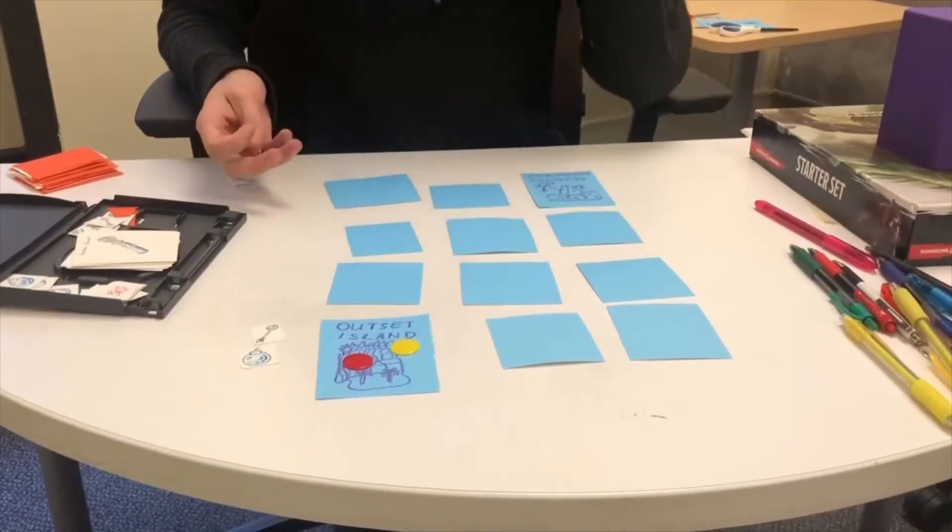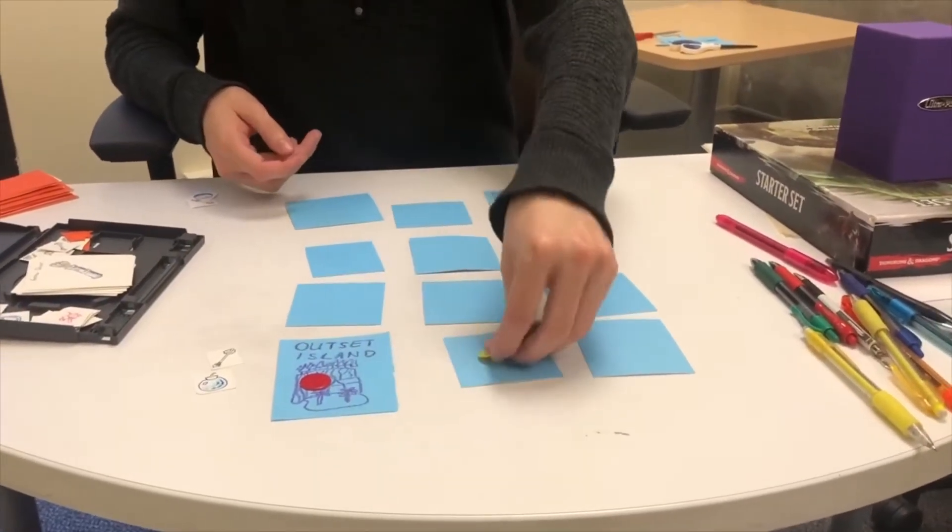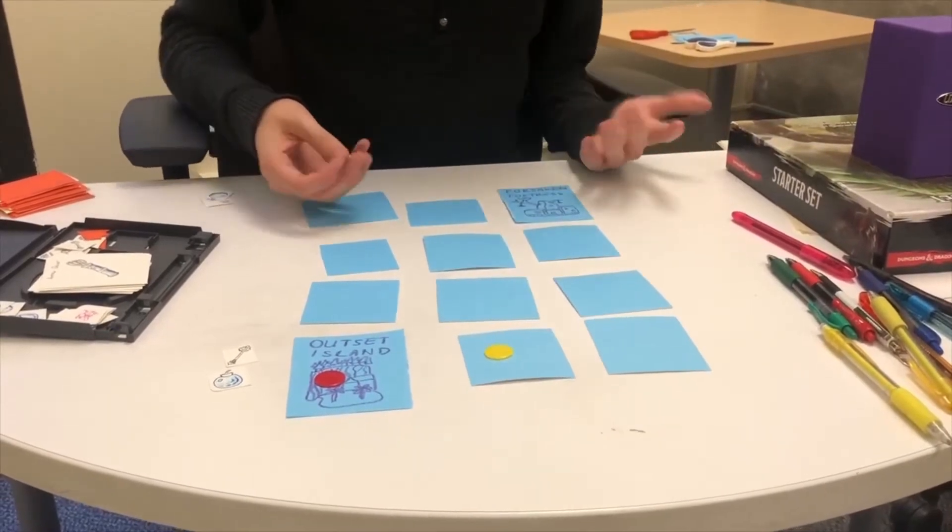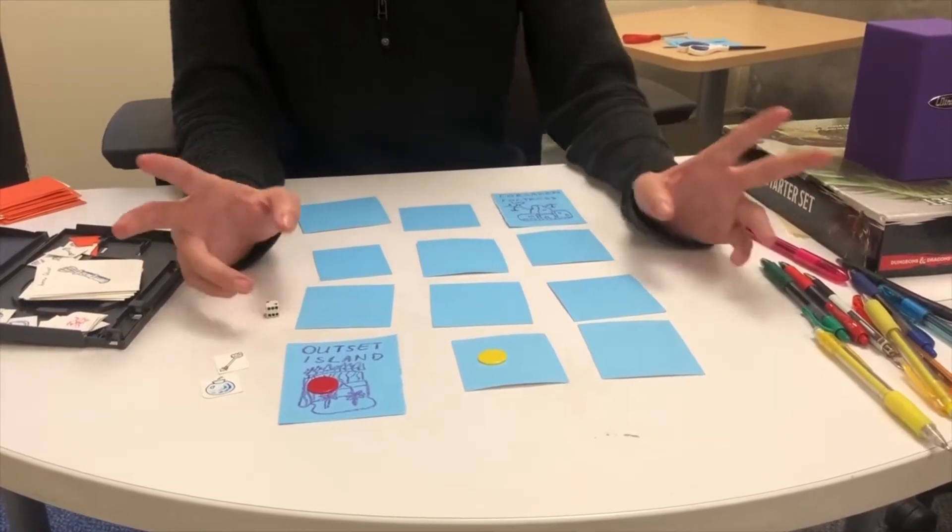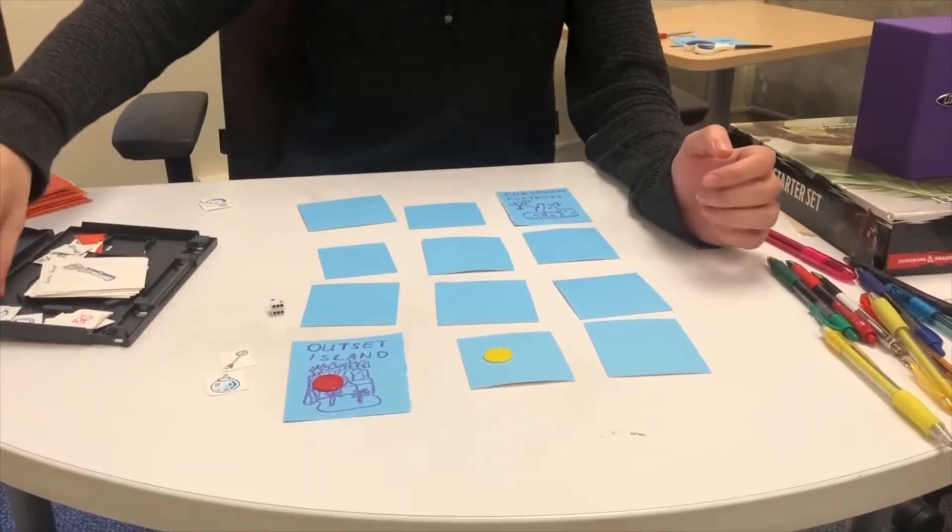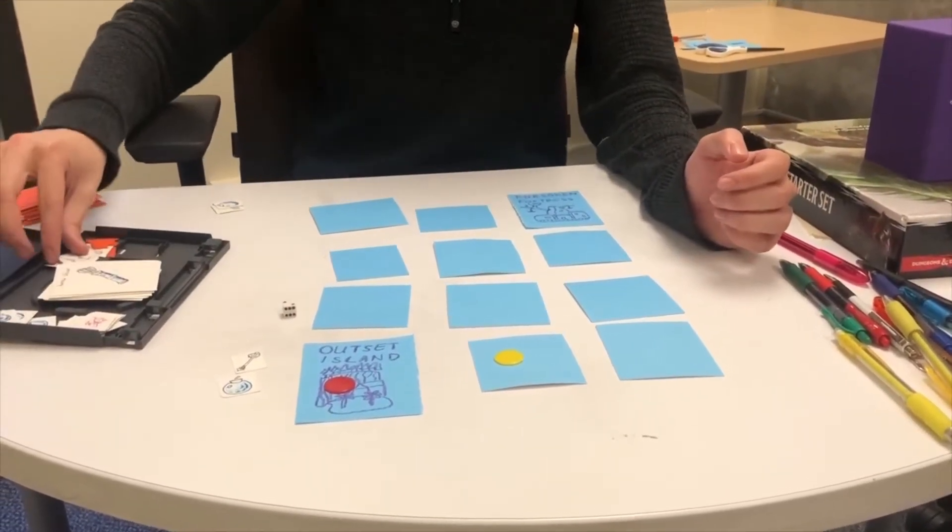In your turn, you can move up to two tiles. Whenever you wish to move to a tile, roll the six-sided die and check for the results on the travel table. In this example, the roll result is 2, which means that the player came across a shop. They may now pick up an arrow or a bomb.